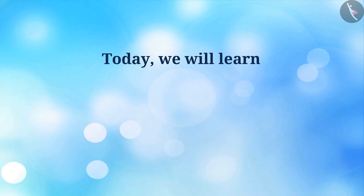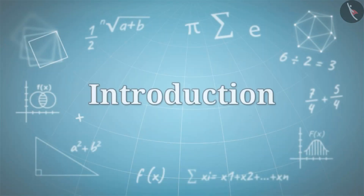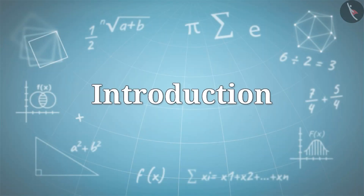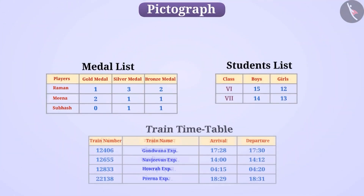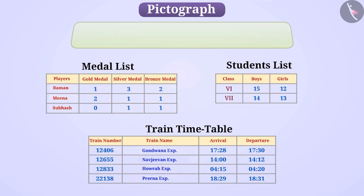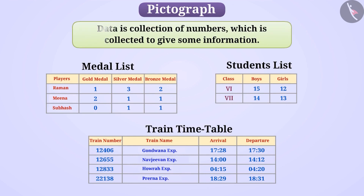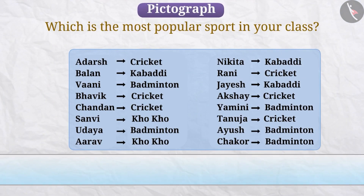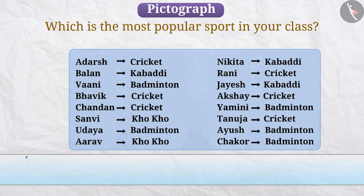Today we will learn about pictograph. In the previous video, we learned that data are a collection of numbers which are collected to give some information. The process by which we collect information related to a subject is called data recording.